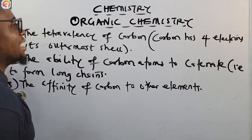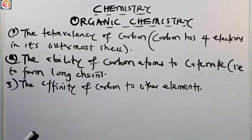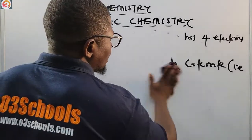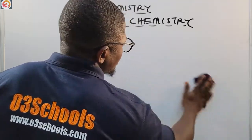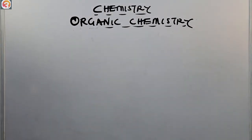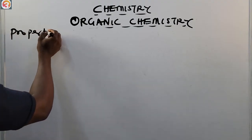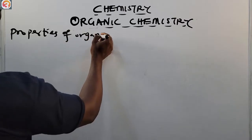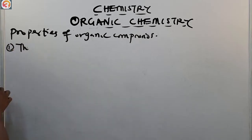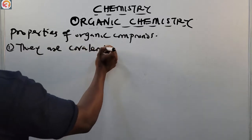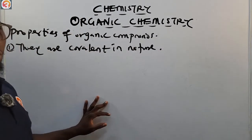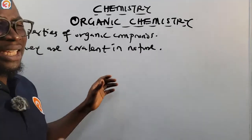Now let's look at the properties of organic compounds. Property number one: they are covalent in nature — formed by the sharing of a pair of electrons between two atoms. If you haven't watched our videos on bonding — ionic bonding, covalent bonding, metallic bonding — please go and watch those episodes.